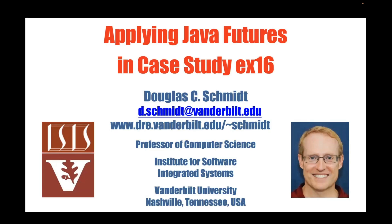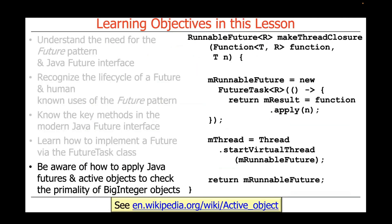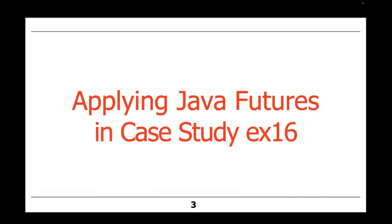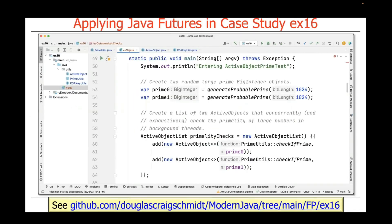Now that we've talked a lot about Java futures and what they are, let's take a look at how to use them in the context of case study EX16. This case study will walk through some code that shows how to apply Java futures and active objects using the active object pattern to check the primality of big integer objects. You'll find this code in the EX16 project in the FP folder in my modern Java GitHub repository.